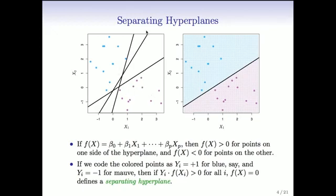This one does, because there's all blue points on one side, all purple points on this side. So does this one, and so does the other one. So, all three of them separate the two classes.